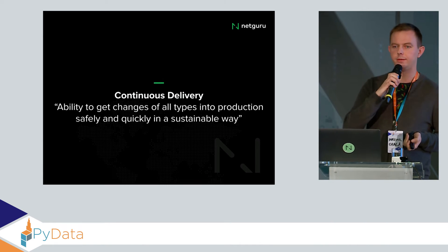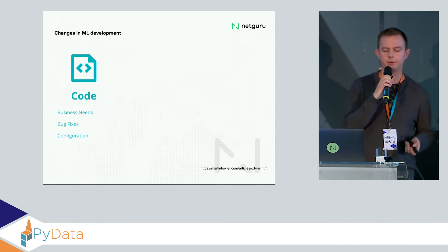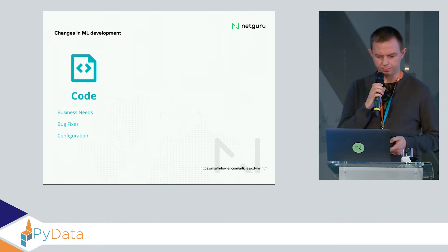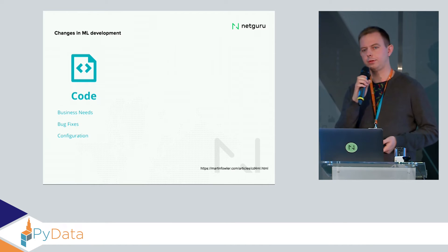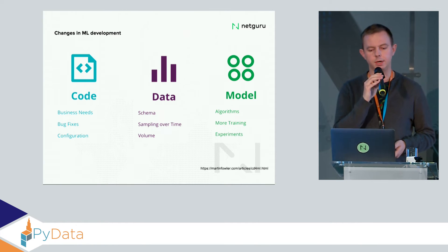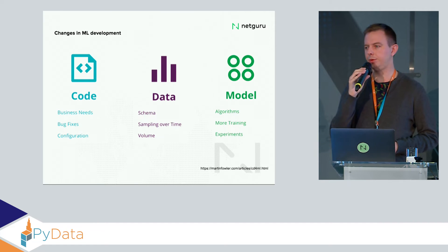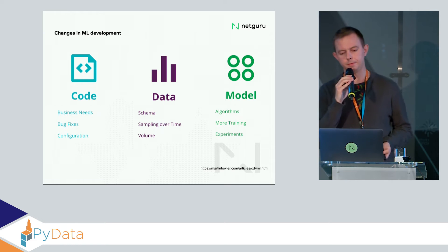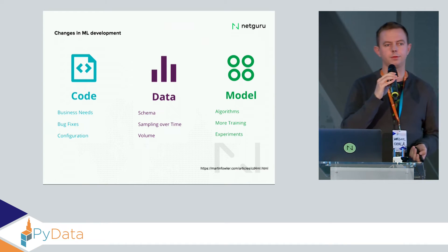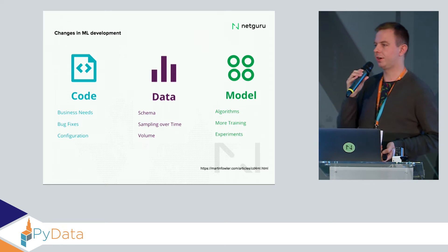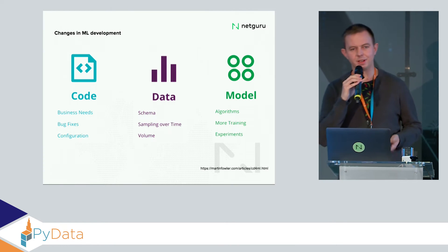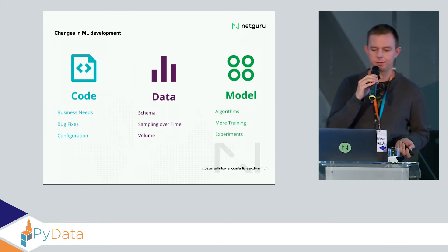But other things also change in machine learning: data and models. Data might have a different schema over time, its distribution might change, and its volume might change. With models, we might try different algorithms, the training environment might change, and library versions might change. For example, in PyTorch 1.1 batch norm was initialized from a uniform distribution, but in PyTorch 1.3 it's initialized as a vector of 1s — making a huge difference in training that's easy to overlook. So we need tools to manage changes in data and in models.